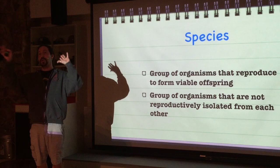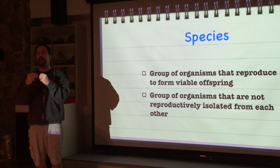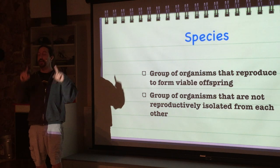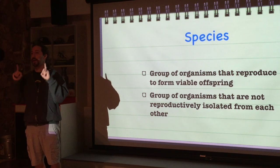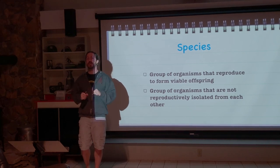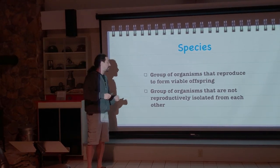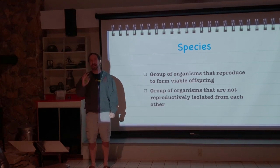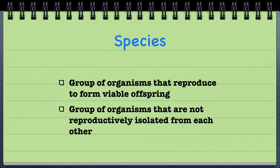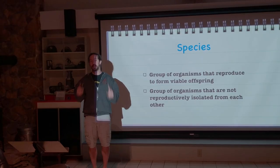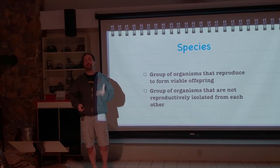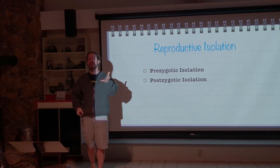If, on the other hand, two different groups could have offspring that can then have offspring, then it gets a lot more interesting. But the next part of our definition is extremely important: it is a group of organisms that are not reproductively isolated from each other. So it's not just about the ability to have offspring that can have offspring, but they can't be reproductively isolated from each other either. That is where we get to the different types of reproductive isolation.